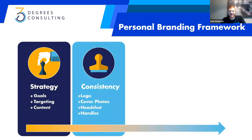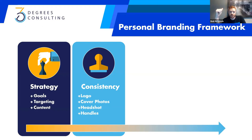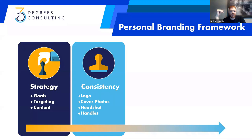So what's the next part? The next part is consistency. When I say consistency, what I mean is across all of your personal branding online, are you consistent? Which means do you have a logo that's consistent on every single channel that you will go on? In this video right here, you can see a logo for our consulting brand, Three Degrees Consulting. Is that logo on everything that you're doing?